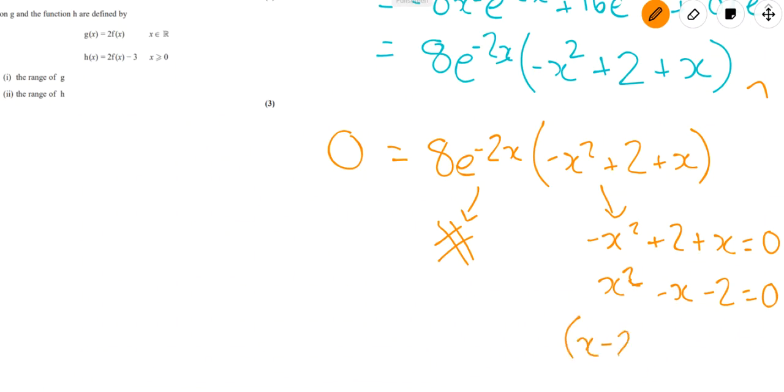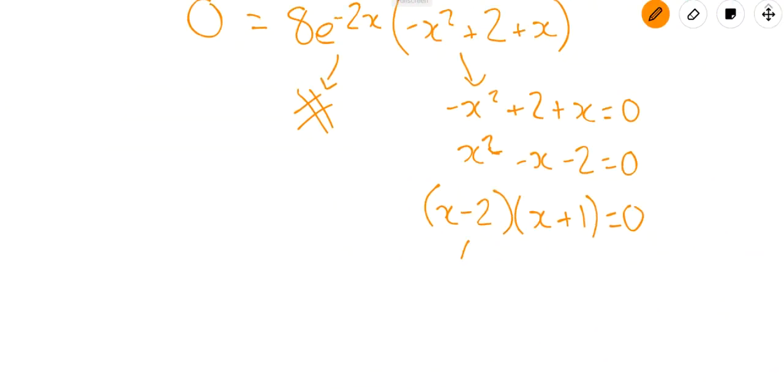And then I'm going to factorise that. So x minus 2 and x plus 1 gives us 0. So if x minus 2 is 0, then x has to be 2. And if x plus 1 is 0, then x has to be minus 1. We want the coordinates of those stationary points. We need y as well. So we can put those back into the original equation. So the big complex one at the beginning that we started with. So that was 4 times x squared minus 2 times e to the minus 2x. If you put those x coordinates into that and simplify, you should get the y values.